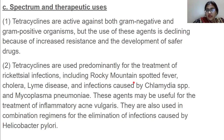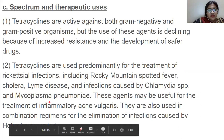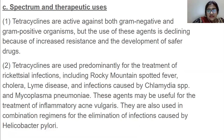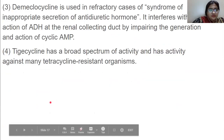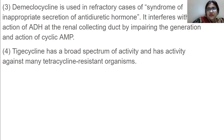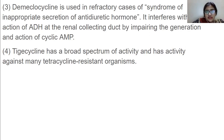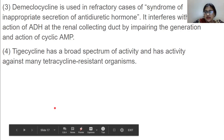Tetracyclines are also used for cholera, Lyme disease, and infections caused by Chlamydia species and Mycoplasma pneumonia. These agents may be useful for treating inflammatory acne vulgaris and are used in combination regimens for infections caused by Helicobacter pylori. Demeclocycline is used in refractory cases of syndrome of inappropriate secretion of antidiuretic hormone — it interferes with the action of ADH at the renal collecting duct by impairing the generation and action of cyclic AMP. Tigecycline has a broad spectrum of activity and is active against tetracycline-resistant organisms.